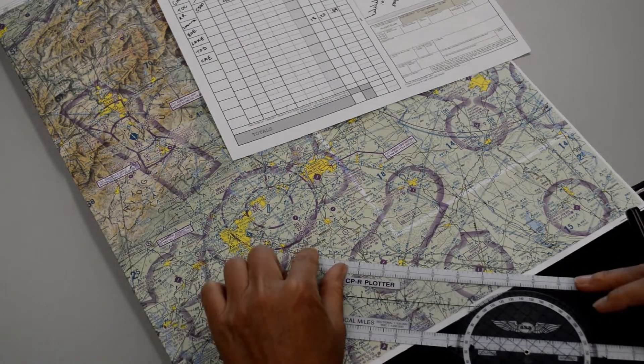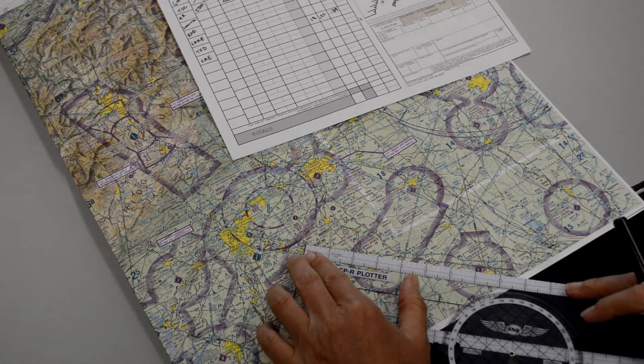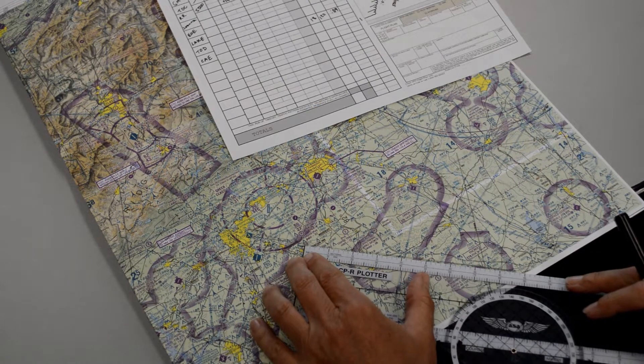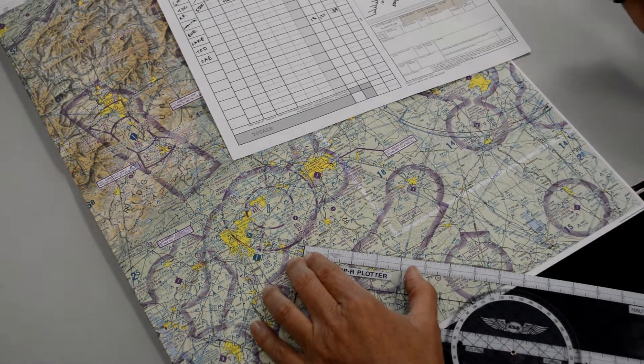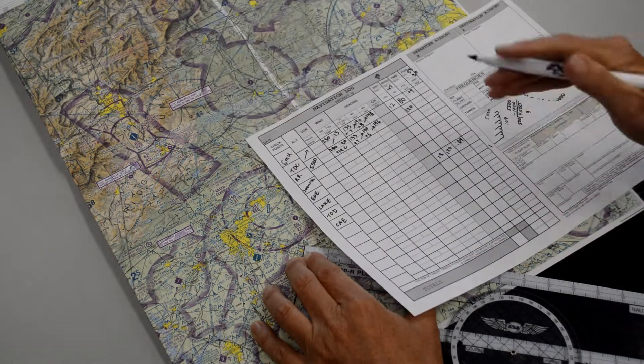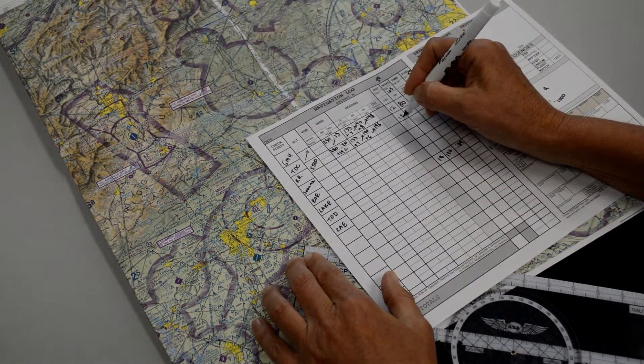We already have the distance for our top of climb. The distance between our top of climb and our first checkpoint appears to be 12 miles. We'll write this in on our flight log, 12 miles.